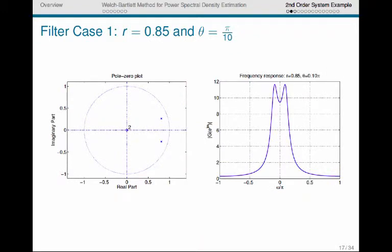Hopefully you did the problem for yourself and you found that the system has two poles and the poles are located at plus and minus theta in angle and the radius of the pole is at r. So if r is equal to 0.85 and theta is equal to pi over 10, this is the pole zero plot that you get. We know that we can do simple sketches of the frequency response from the pole zero plot. We know that poles tend to push the frequency response up, so we expect to see peaks around plus and minus pi over 10, which we do. Here's the frequency response generated by MATLAB.